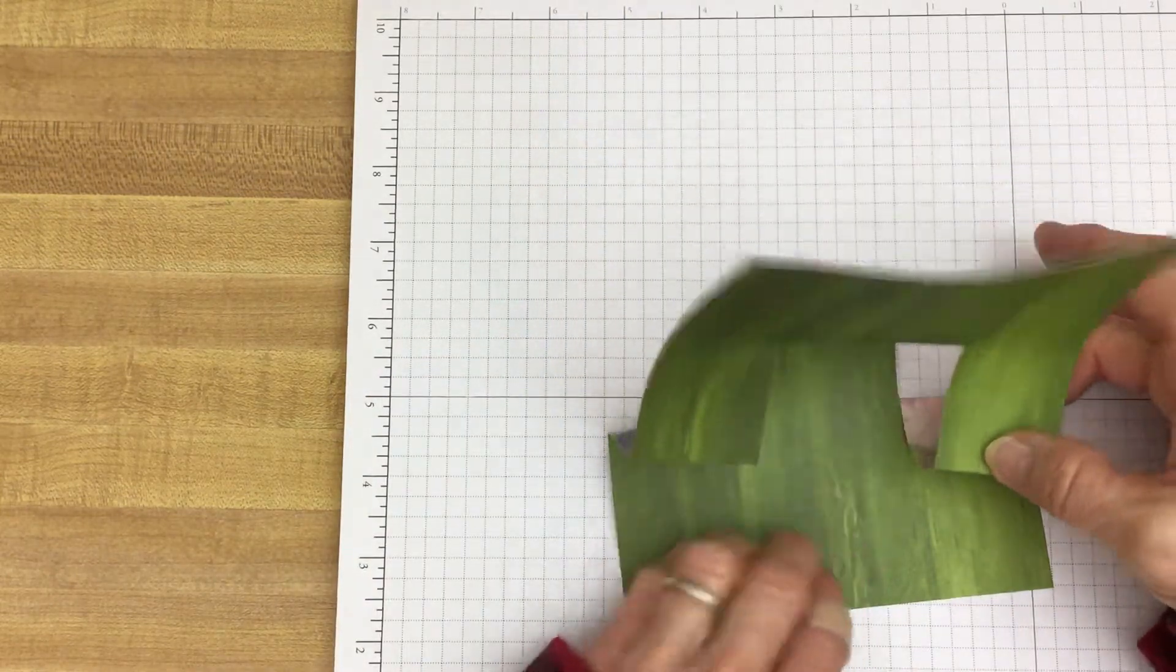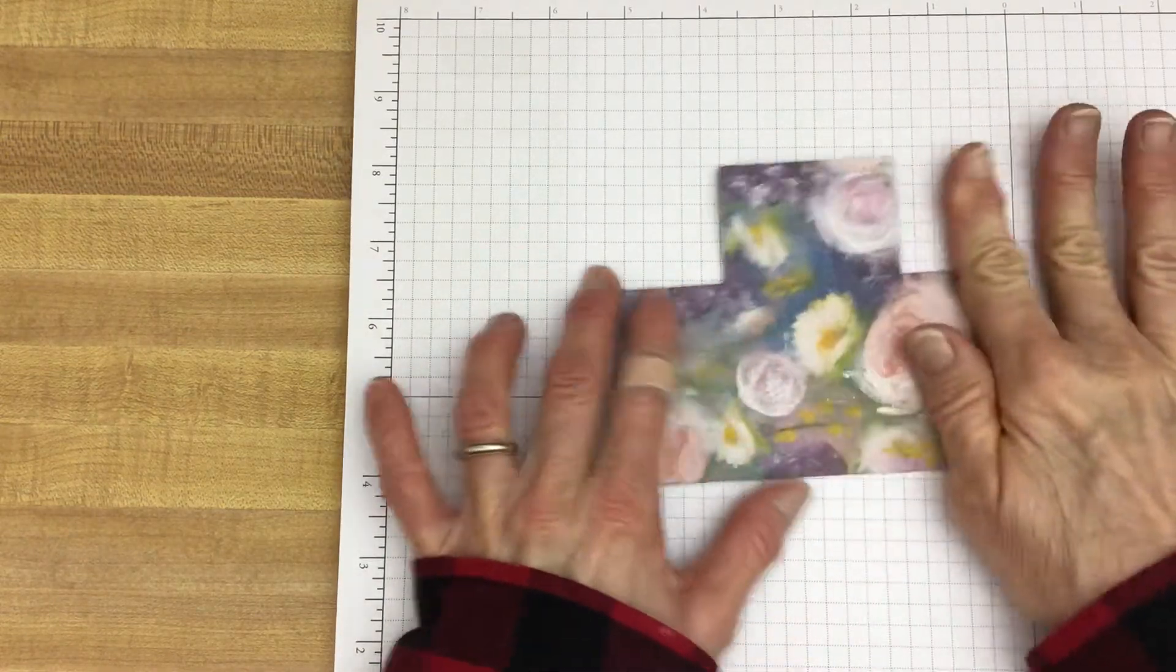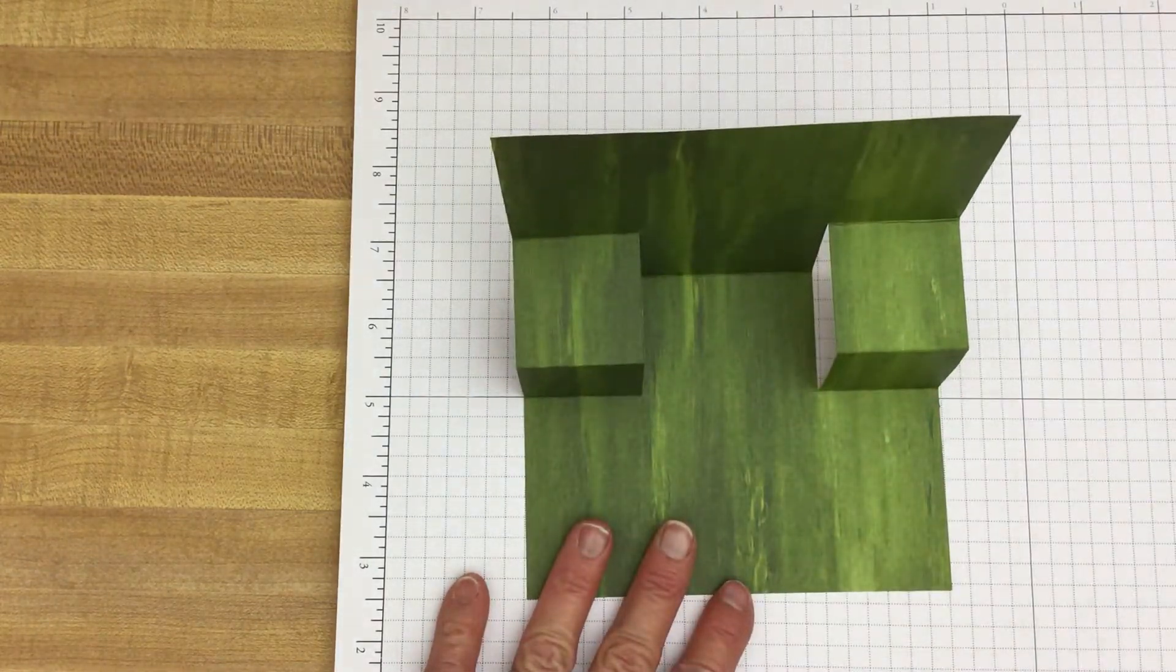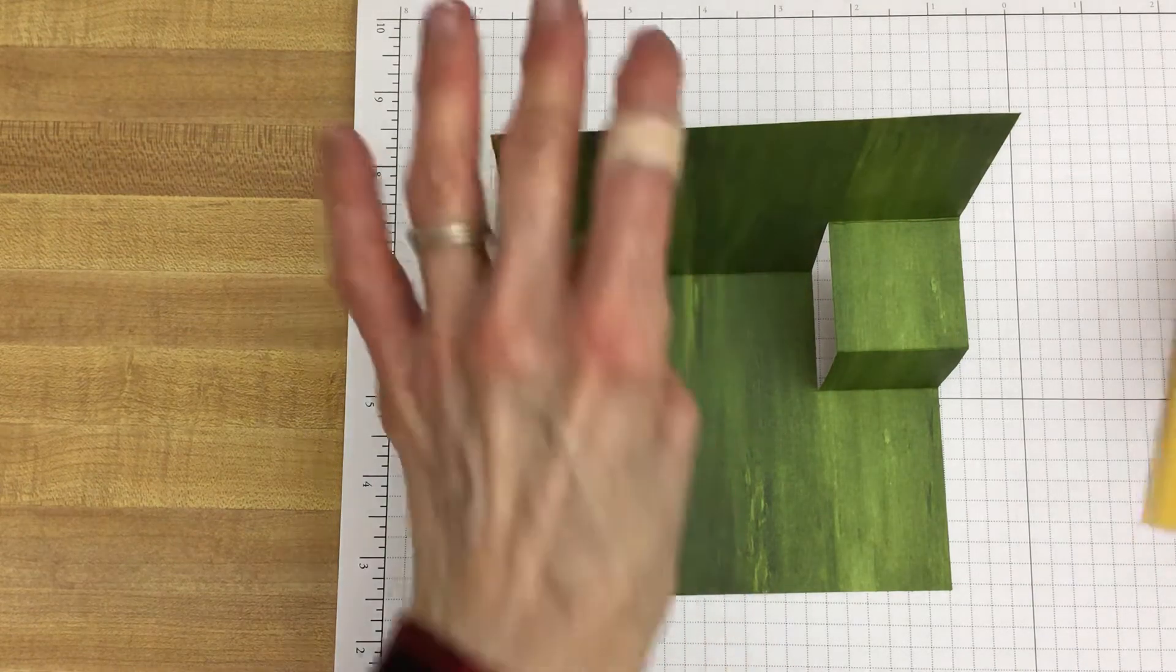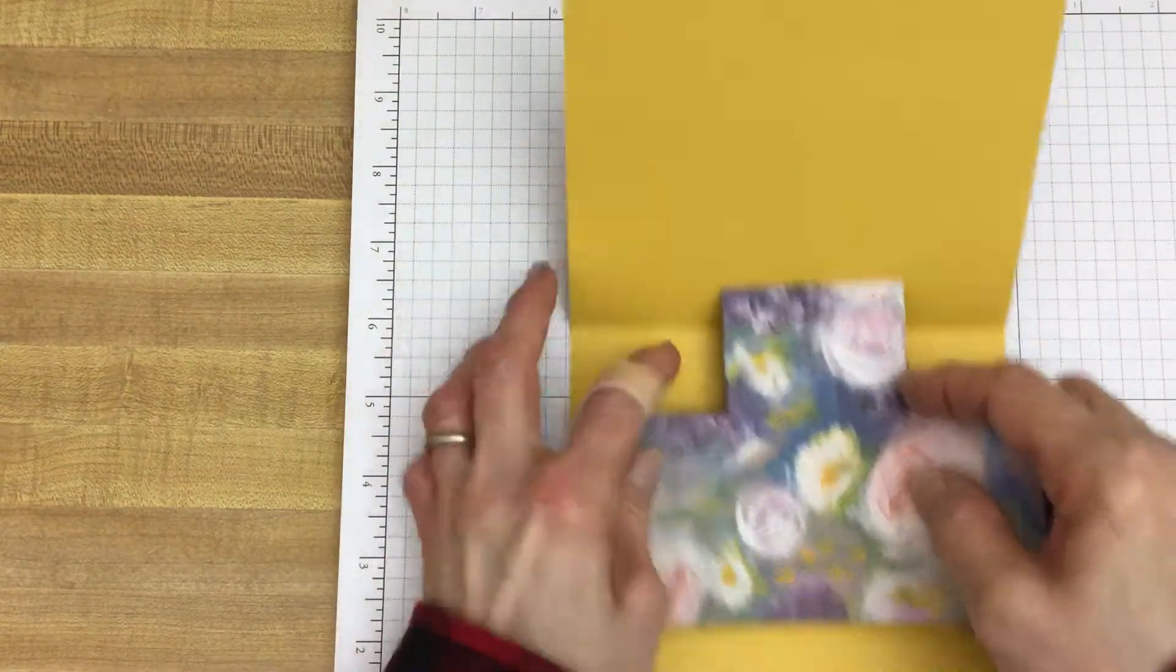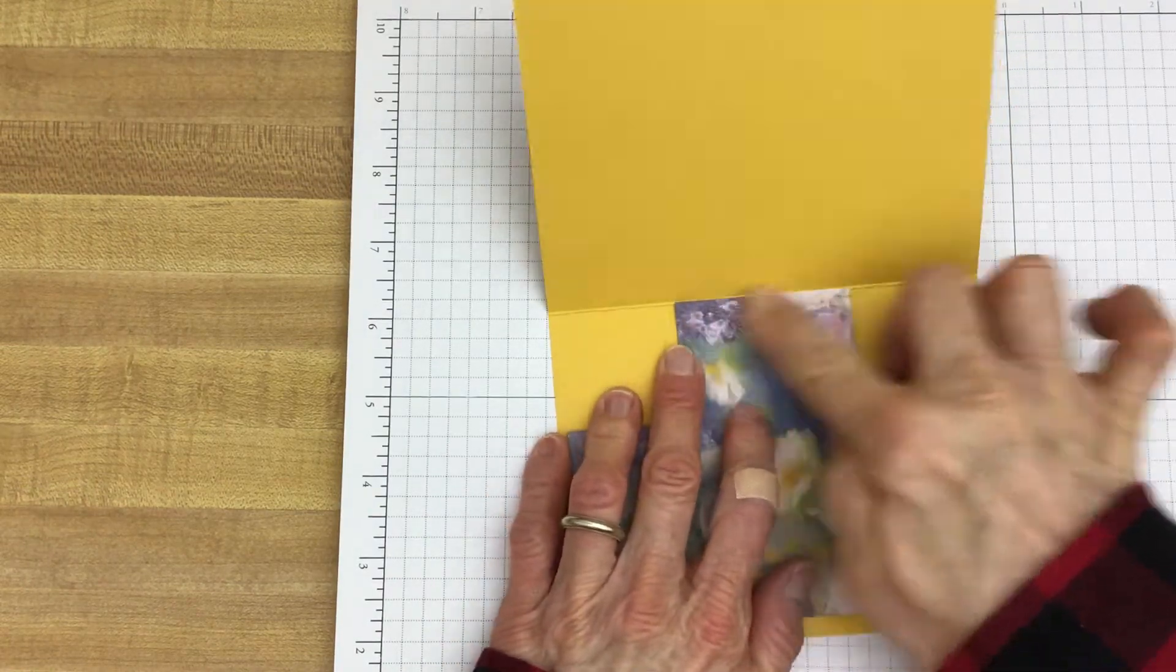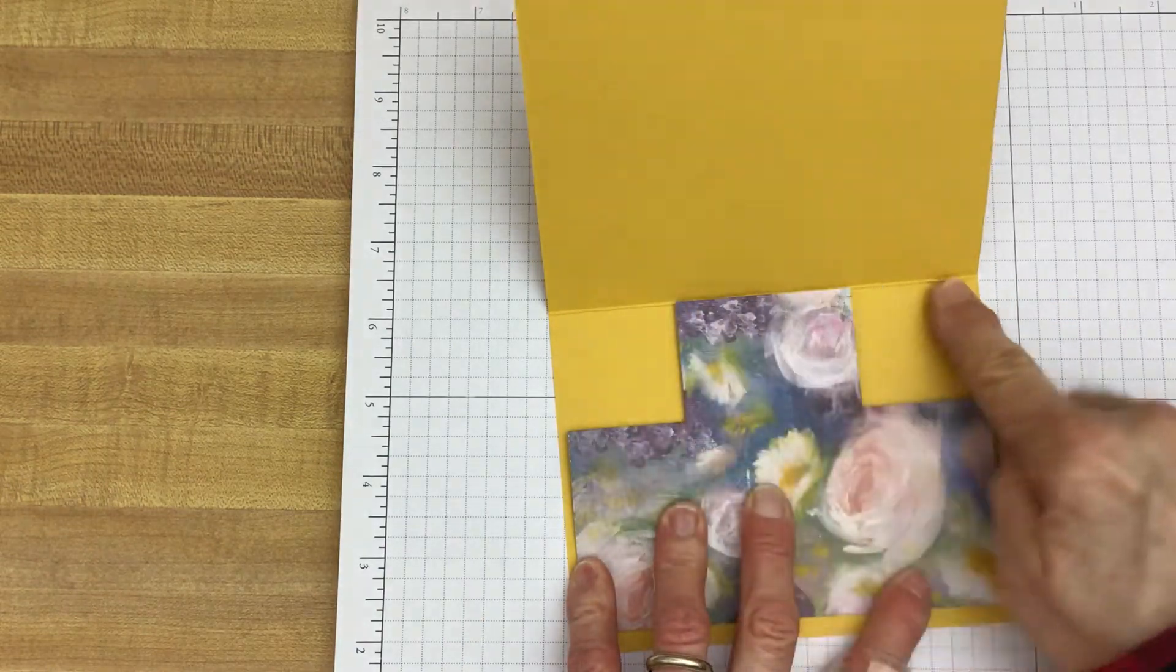And now just pop this up. Pop this up. And fold. There's your mechanism. And this is where you would attach the items that you would like to pop up. And when you go to put it inside your cardstock, fold it down.